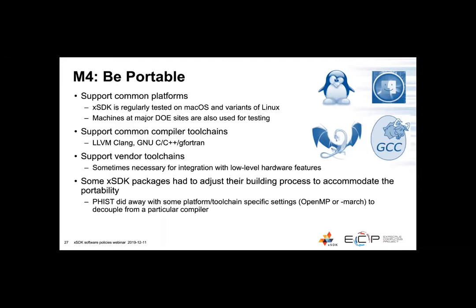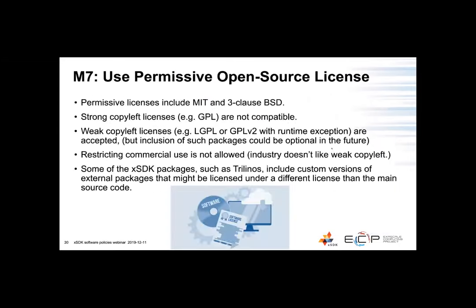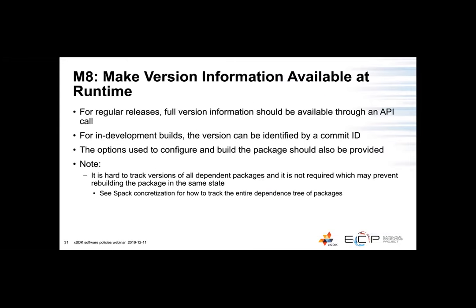Q&A: Regarding mandatory policy number eight (M8), can version information be provided via a macro, or does it need to be an actual function call? If there's only a macro available, the macro does not apply to libraries on the system, and there might be issues between included headers and linked libraries. So as part of this policy, it is explicitly required to have a function call in the library with version information literally inserted in source code, put in an object file, and inserted in the library. It has to be a function call.